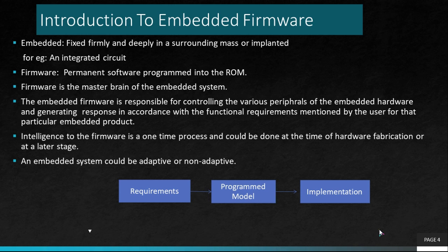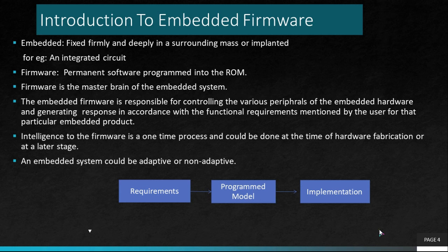Next is the designing of the embedded system. Designing requires — as the very first stage — sorting down the requirements needed to produce the embedded product. Whenever a person requires development of an embedded system, they sort out all those things required for the product. These requirements can be made more descriptive with the help of UML diagrams, which help in making decisions easier. The requirements are then converted into a programmed model using programming languages understood by both the controller and the end user. Finally, this programmed model is implemented — the tasks and actions are functioned into the working system.